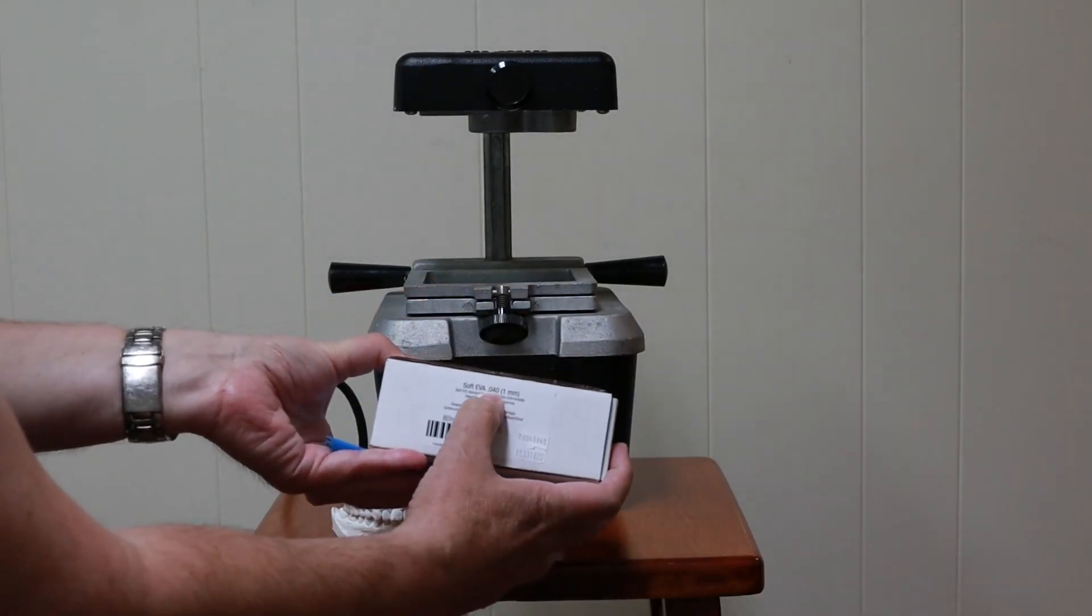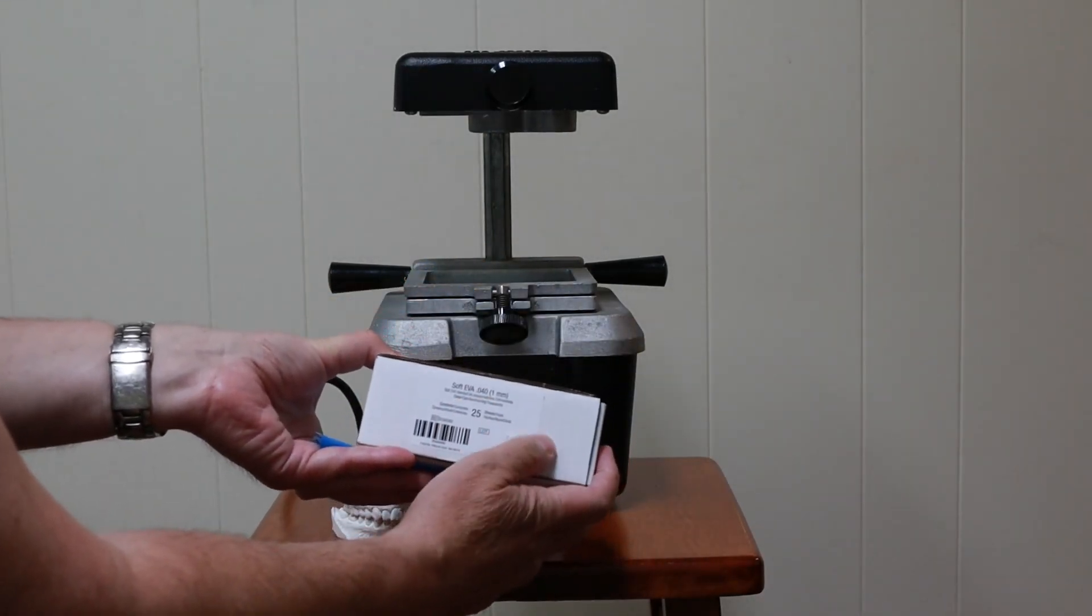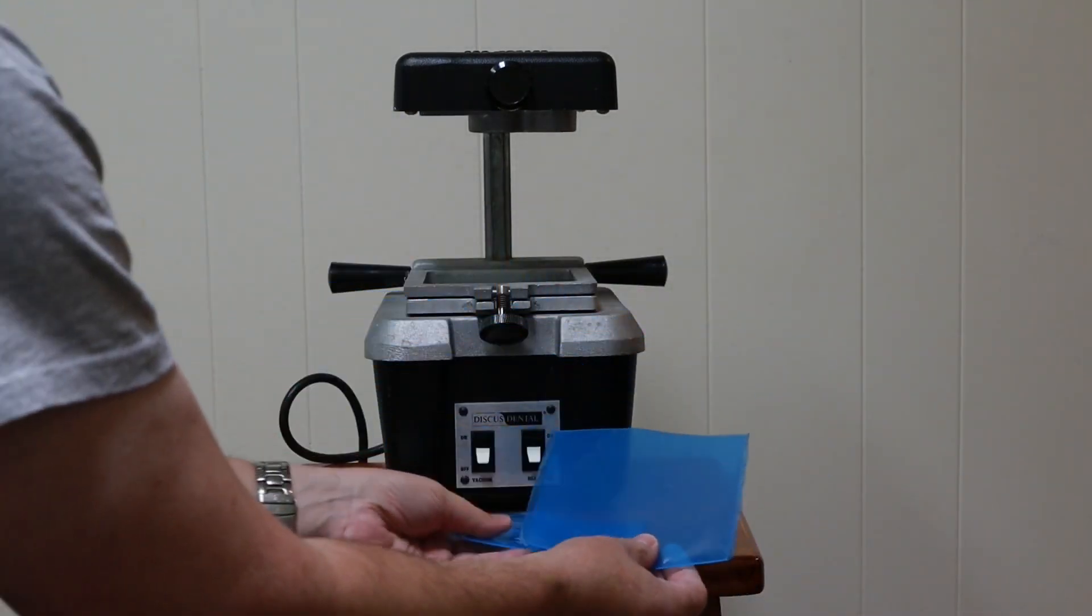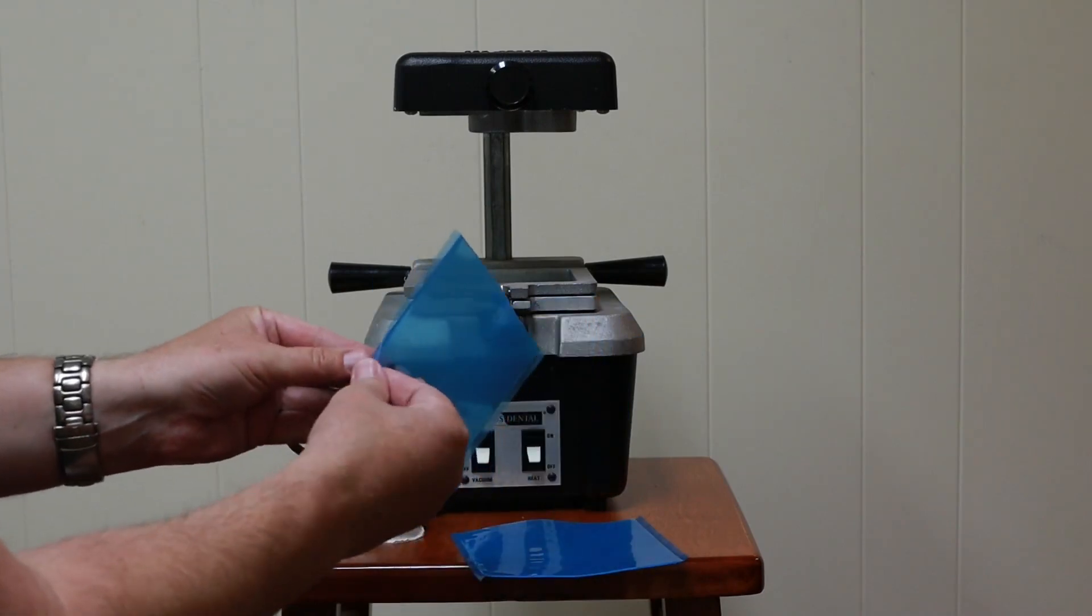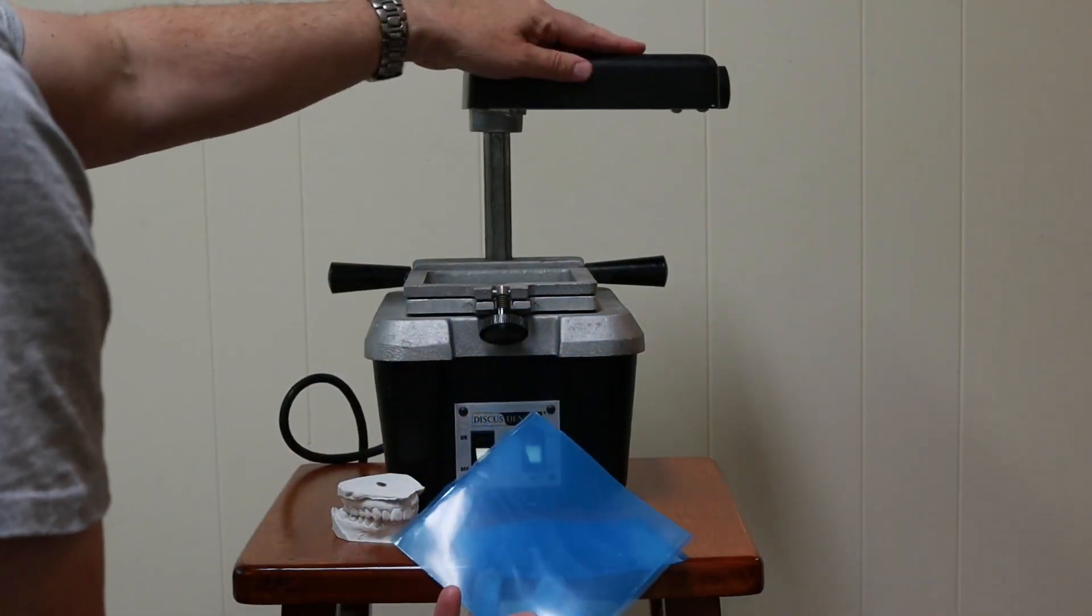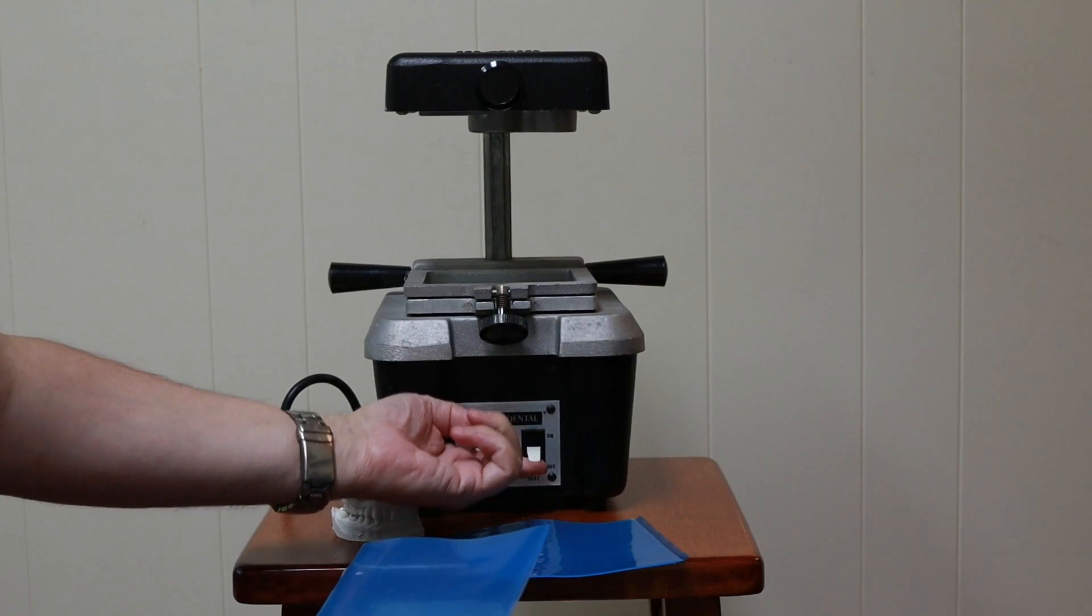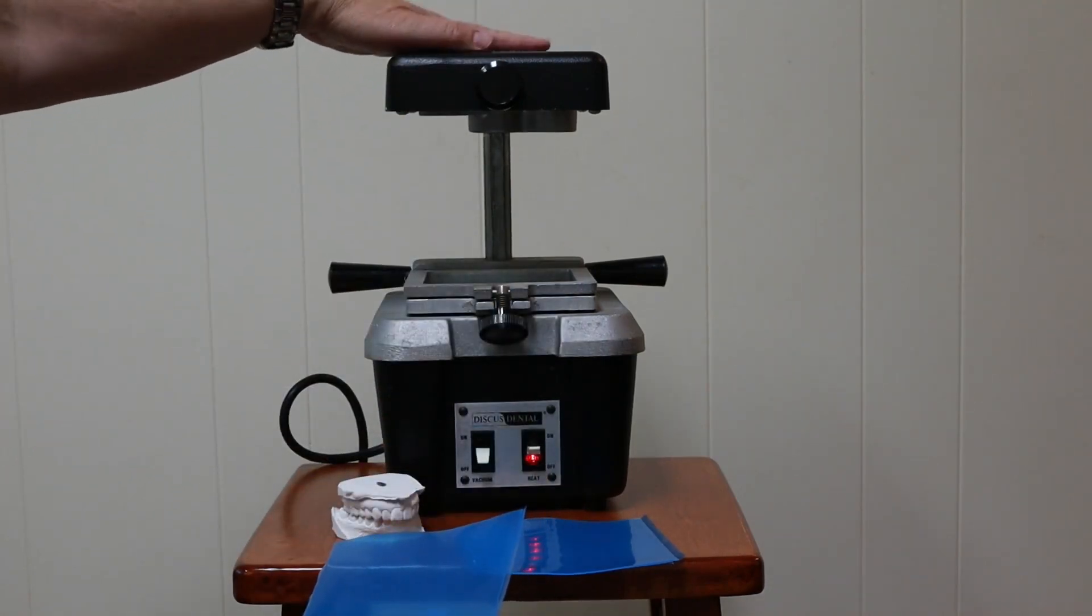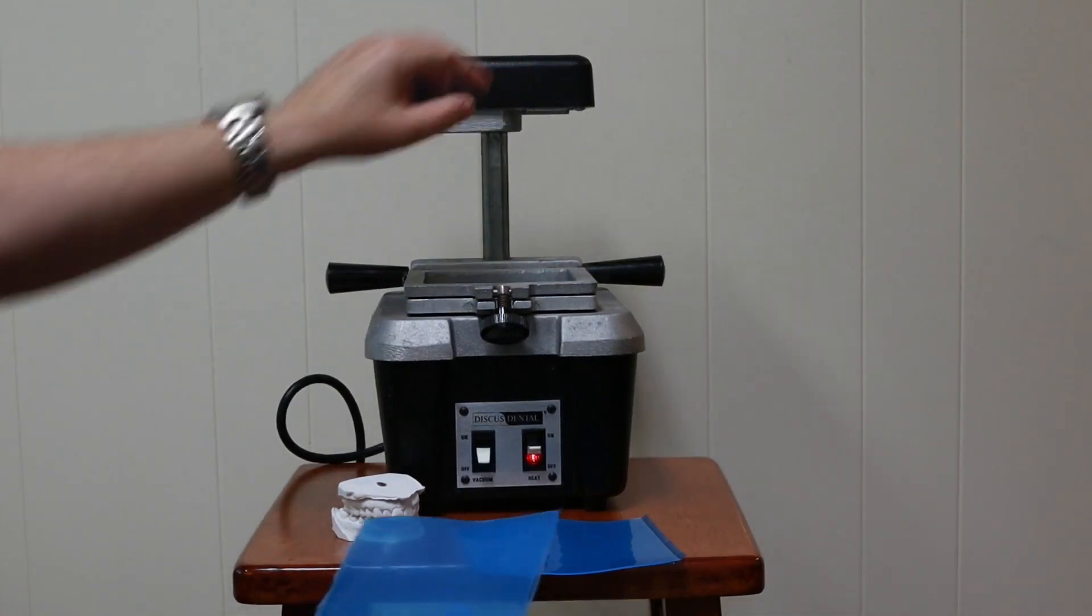This is 40 thousandths thick, so it's about a millimeter thick. First step, I like to turn on the heater on the vacuum forming machine. The heater is up here so this will get warm. Let me rotate that out of the way.